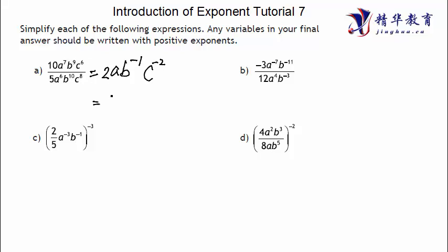It's not done yet. So 2a is done. b to the negative 1 power equals 1 over b, so b is in the denominator. And then c to the negative 2, which is equivalent to 1 over c squared, so c squared is also in the denominator. So that is the final answer here.